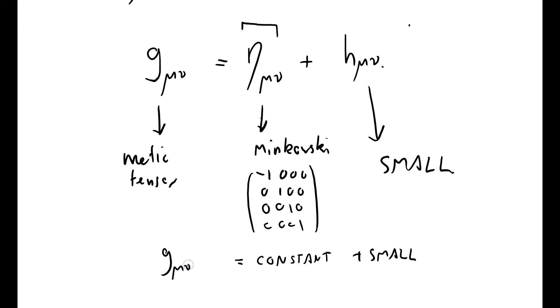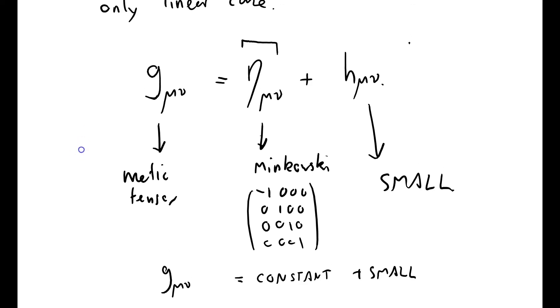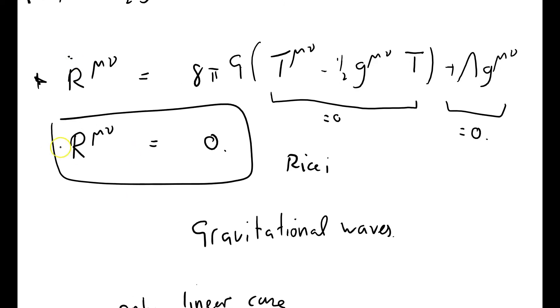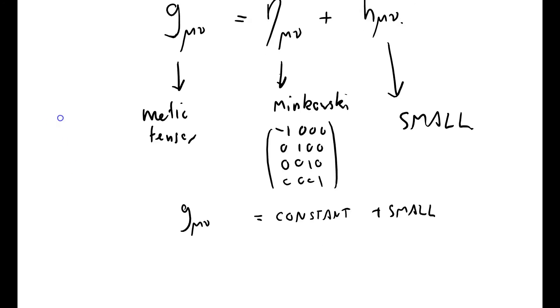So it's constant plus small. g_μν is a sum of a constant thing and a small thing. And I will use these two facts over and over and over again to give us linear solutions, in a sense which I'll make precise, to the vacuum field equations here.